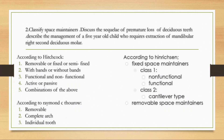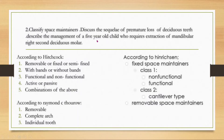The next topic is space maintenance. The question asks to classify space maintainers, discuss the sequelae of premature loss of deciduous teeth, and describe the management of a five-year-old child. This is a very commonly asked question — the age may be five, six, seven, or eight years old, just to confuse you, so always expect a question like this.